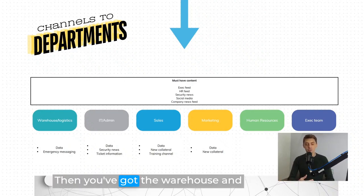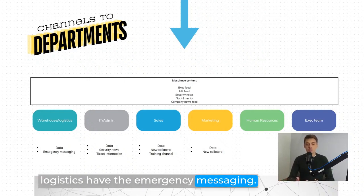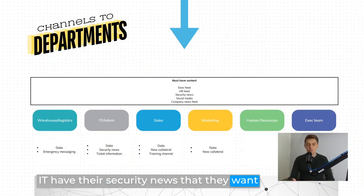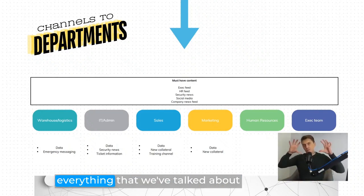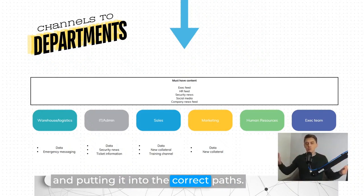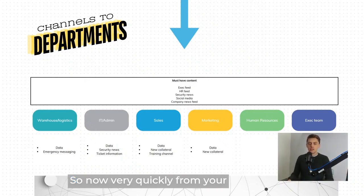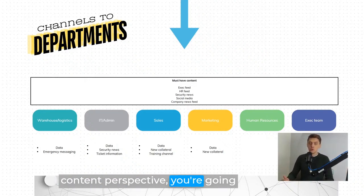Then you go down to the more unique content. Warehouse and logistics receives the data channel because they want that warehouse information, and they receive the emergency messaging channel — which will be built into triggers later from a web trigger perspective. IT, sales, marketing, and warehouse all want the data channel, but HR aren't too worried about data in this case and won't receive that channel. The exec team also have data, which is really important. IT have their security news and ticket information. It's just rejigging everything into the correct paths.